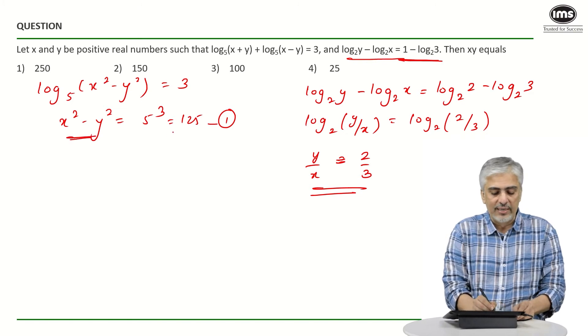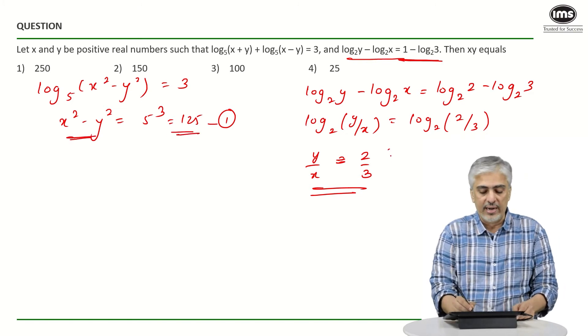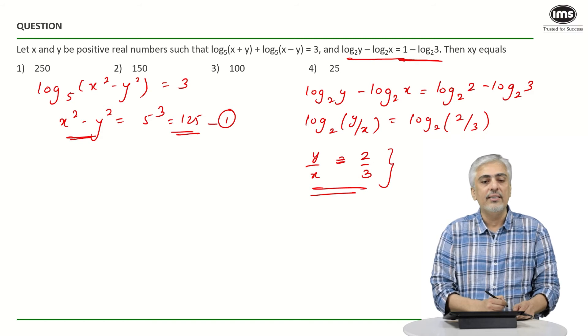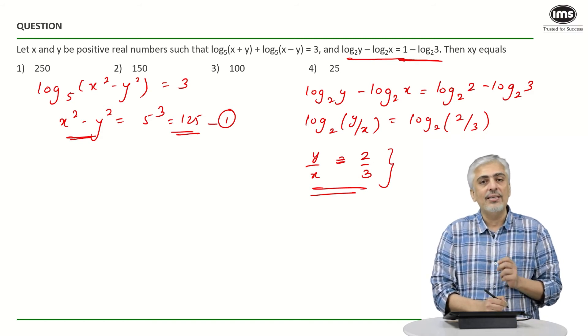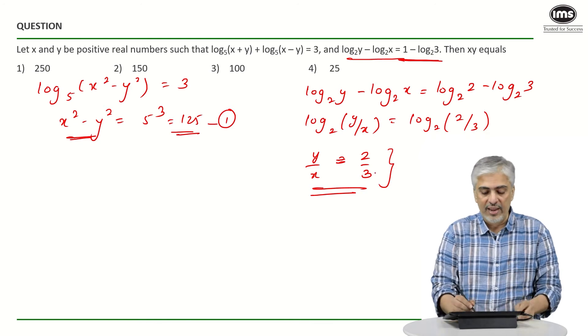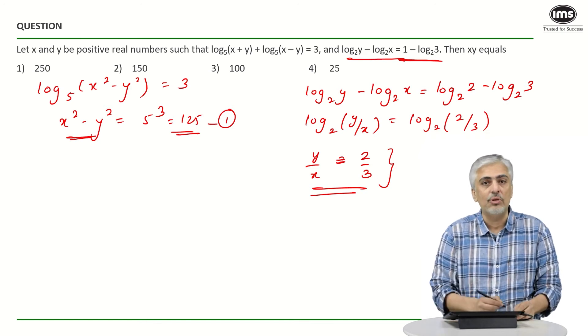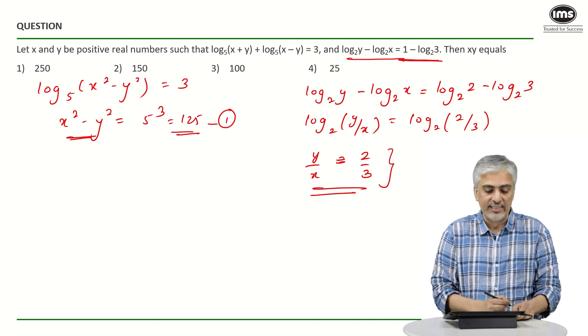After this step, x² minus y² is 125 and y/x is 2/3. Remember they have asked us for the value of x into y. Now think a little bit. If x is a multiple of 3, y is a multiple of 2, which means x into y has to be a multiple of 6.